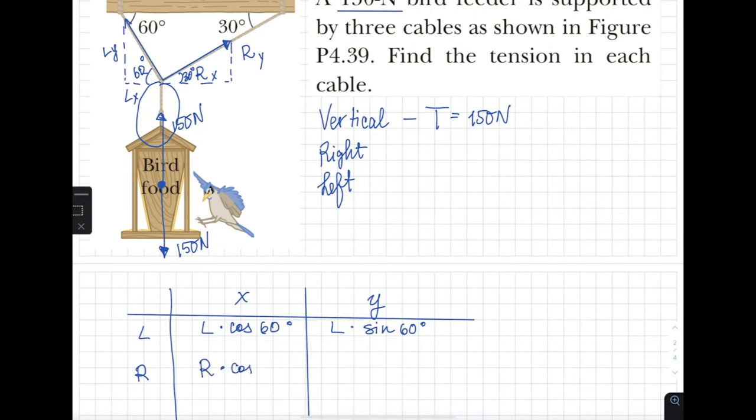For the right cable, same idea. This is 30 degrees right here, therefore I'm going to say right cosine of 30 and then right sine of 30. Now the thing is horizontally I technically have to say that this is negative because it's pulling to the left.